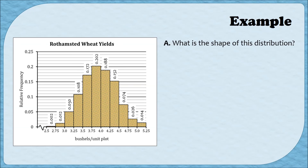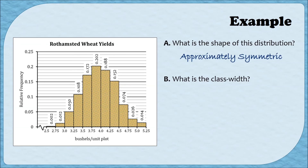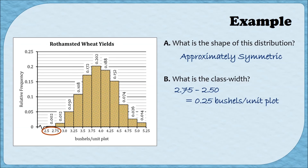Question a: What is the shape of this distribution? The shape is easy to spot — one tall bar in the center, gradually getting shorter on either side, with tails on the left and right of about the same length. So this distribution is approximately symmetric. Question b: What is the class width? To find the class width from a histogram, subtract any two consecutive values on the horizontal axis. My first two lower limits are 2.5 and 2.75, so the class width is 0.25 bushels per unit plot.